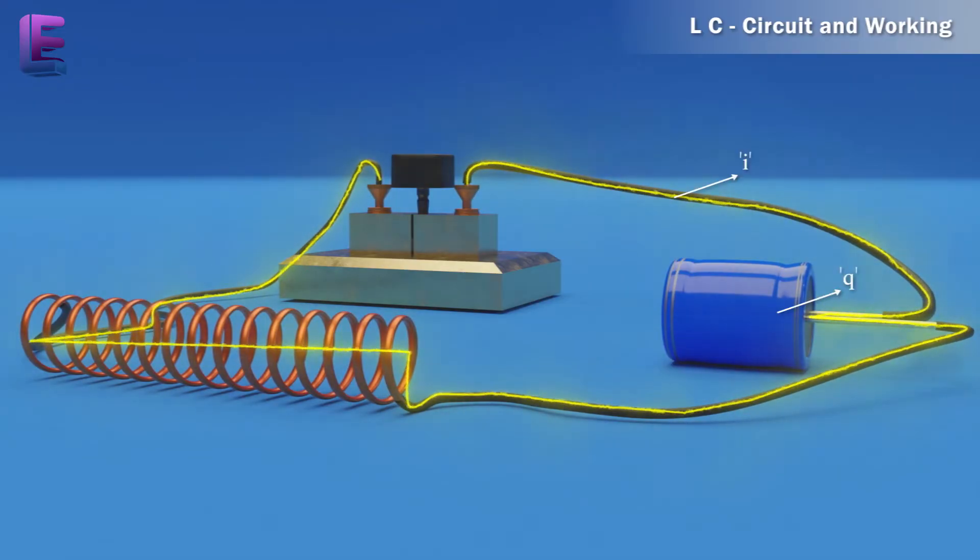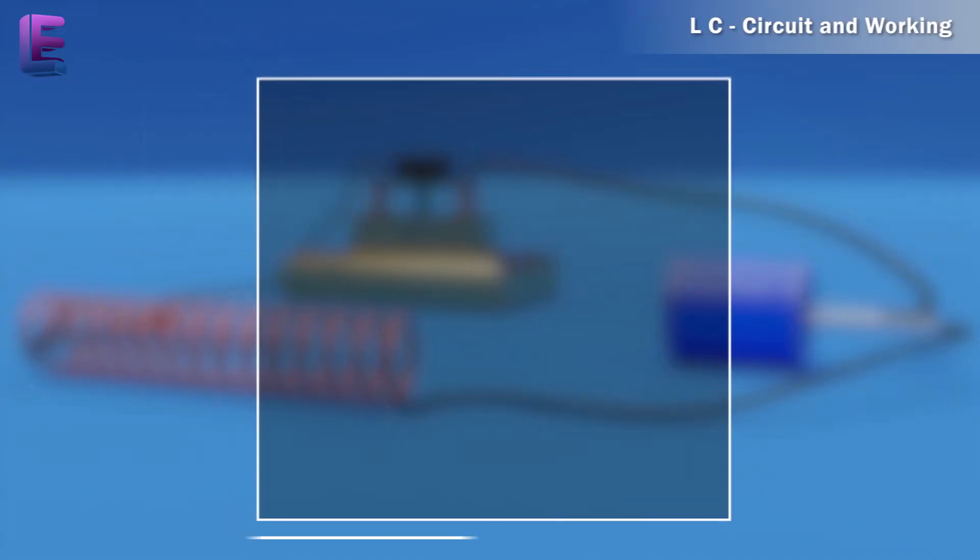Let q and i be the charge and current in the circuit at time t. Since di by dt is positive, the induced emf in L will have polarity as shown. That is, vb is less than va. According to Kirchhoff's loop rule, q by c minus L into di by dt equals 0.